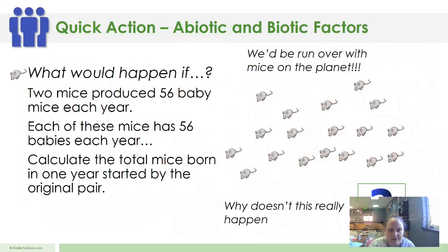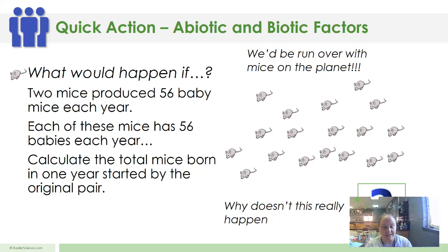What would happen if two mice produce 56 baby mice each year, and each of these mice also has 56 babies each year? Calculate the total mice born in one year started by the original pair. So if you have two mice and they have 56 — so now there's 58 — and those 56 babies have 56 babies, that would be 56 times 56, which would be 3,136 mice in this little community.